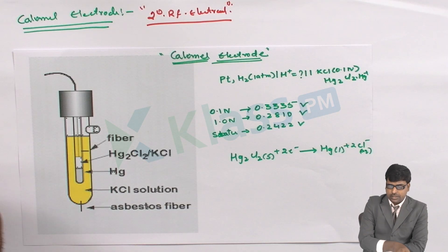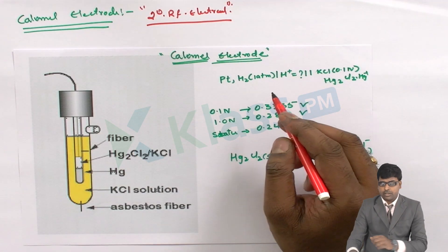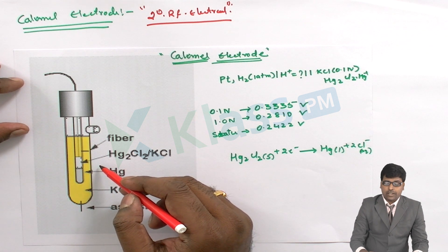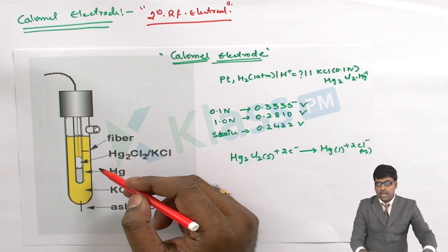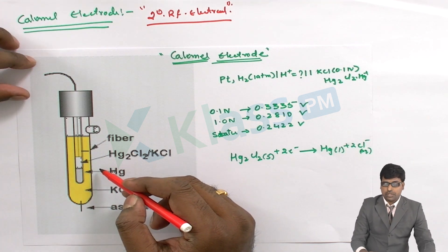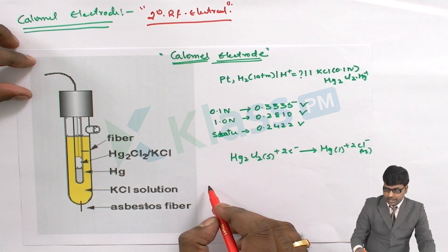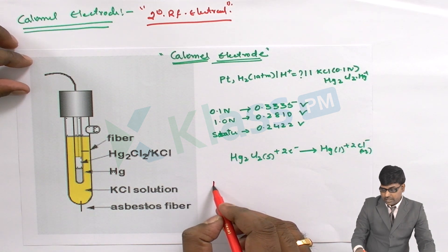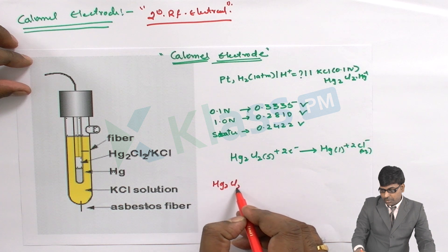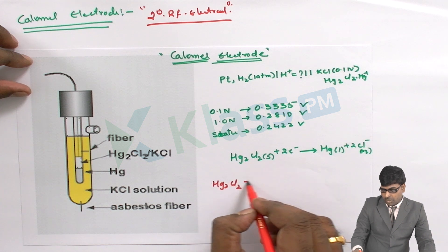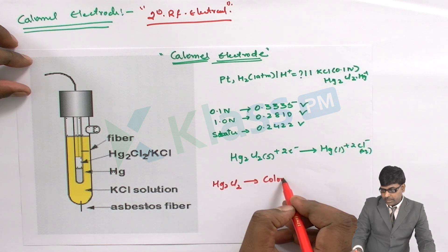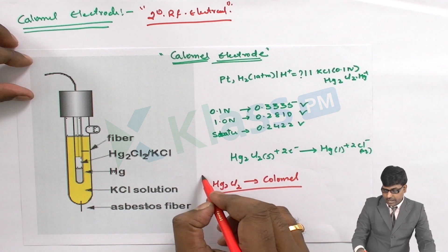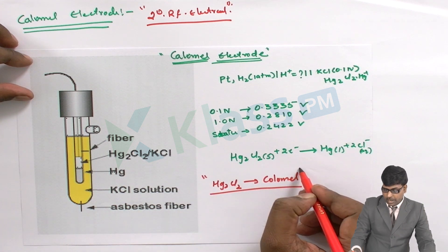This is the Calomel electrode. Calomel means mercurous chloride, which is called Hg2Cl2, and that compound itself is called Calomel. That is the reason this electrode is called the Calomel electrode.